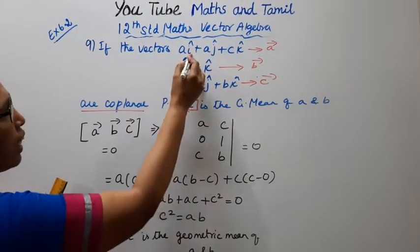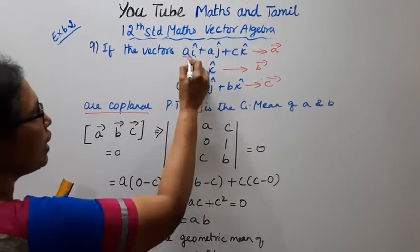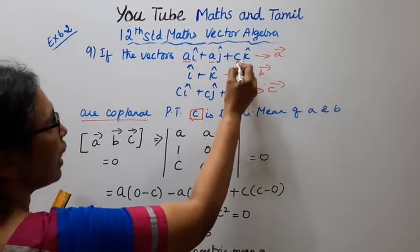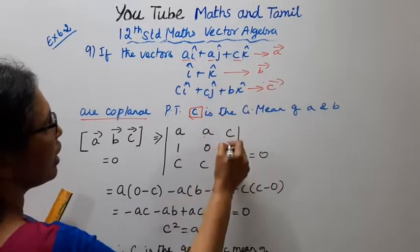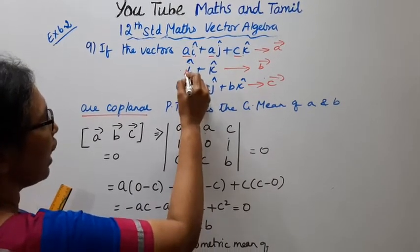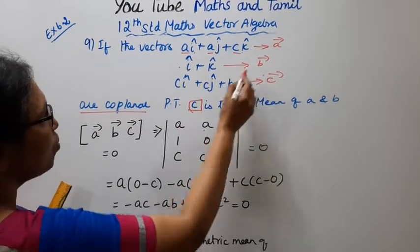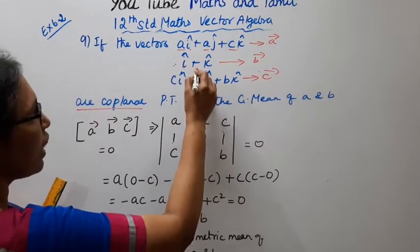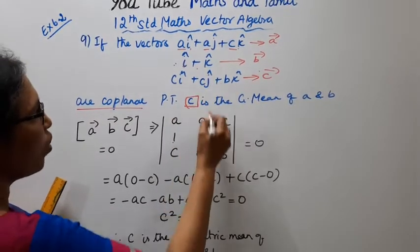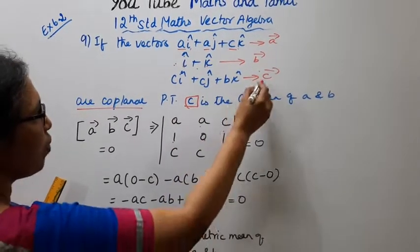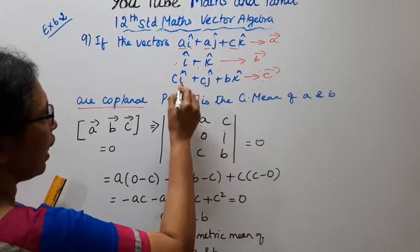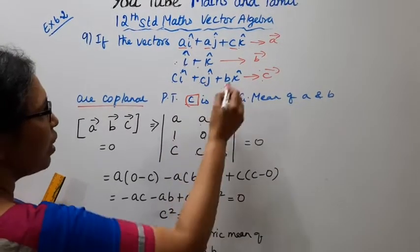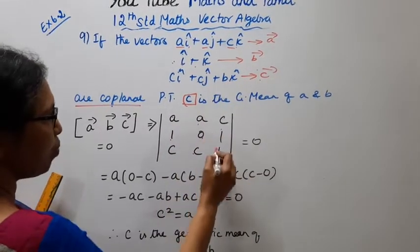Setting up the determinant: for a-vector, i-cap is a, j-cap is a, k-cap is c. For b-vector, i-cap is 1, j-cap is 0, k-cap is 1. For c-vector, i-cap is c, j-cap is c, k-cap is b.